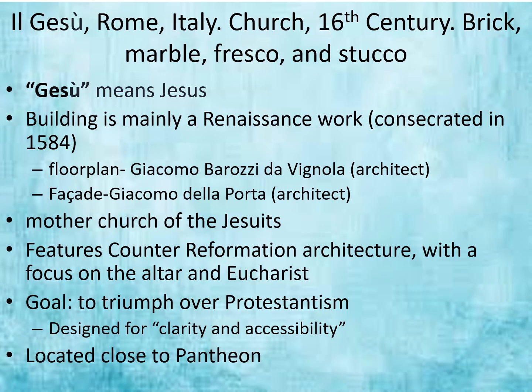Next on our list, we have Il Gesù—a church in Rome, Italy, in brick, marble, fresco, and stucco. Gesù means Jesus. The building is actually mainly a Renaissance work, consecrated in 1584. The floor plan was by Giacomo Barozzi da Vignola and the facade was developed by Giacomo della Porta. This was the mother church for the Jesuits at the time during the Renaissance. It features Counter-Reformation architecture—during the Counter-Reformation there was a high interest in having any architectural space for religious purposes bring the viewer's attention to certain details, in this case a focus on the altar and Eucharist. The goal, as historians say, for Counter-Reformation architecture was to triumph over Protestantism.